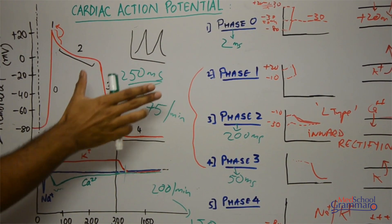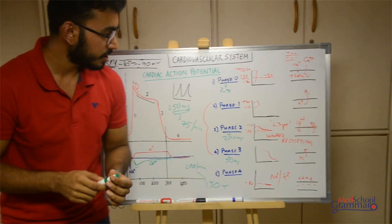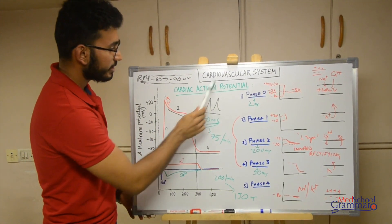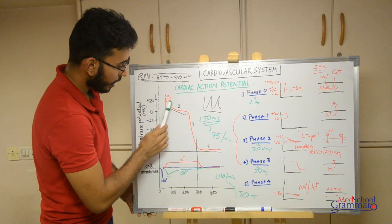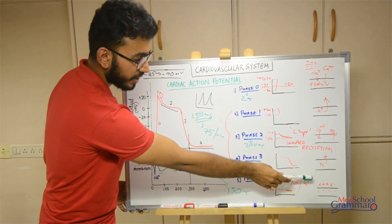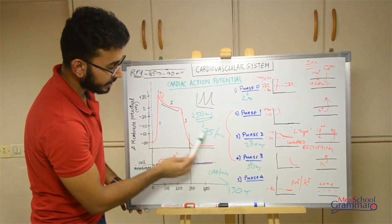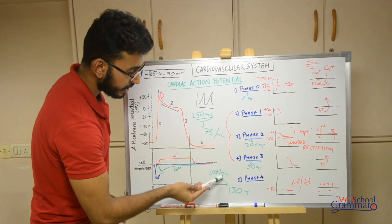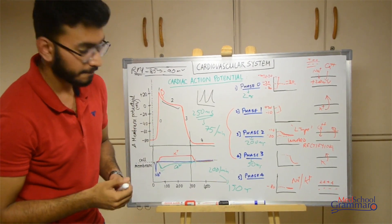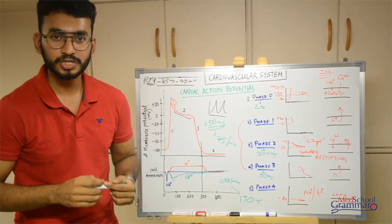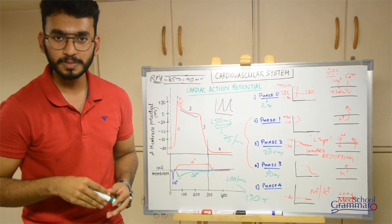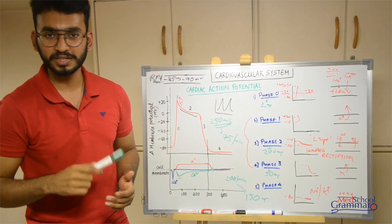To summarize: cardiac action potential has five phases — phase 0 through 4. We've covered the ionic basis of all five phases and the time duration of the entire cardiac action potential, and seen that if heart rate increases, the cardiac action potential duration decreases. That's it for cardiac action potential. Go back to your books and read it — it will be really simple for you now.